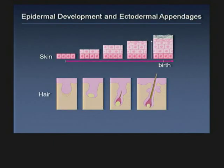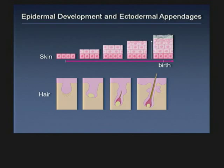Moving to the second aspect of skin development: during the time that this stratified epithelia is forming, there is also the generation of structures called ectodermal appendages. An example is the hair follicle. It initiates as a bud from the single-cell epithelia and, through a series of morphological events, ends up forming a highly sophisticated structure — the hair follicle with a hair shaft. Alterations in the formation or later regeneration of this structure lead to diseases that cause loss of hair, or alopecia.